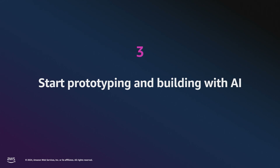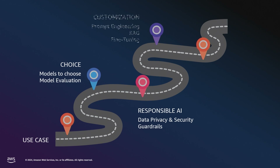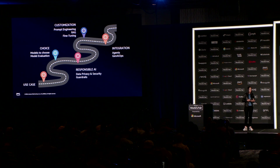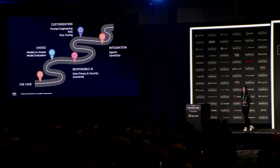Step three is where the fun starts: prototyping and building with AI. It begins with defining your use case, then choosing from different models, customizing them through prompt engineering, RAG, or fine-tuning, and across the whole workflow, incorporating responsible AI policies — making sure data is private and secure and implementing guardrails in your application.